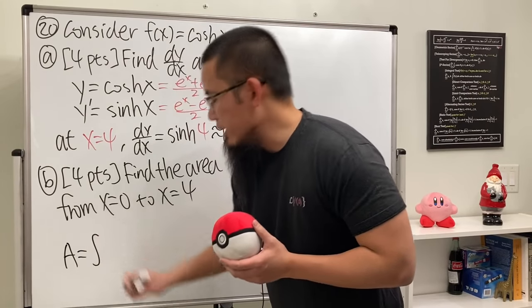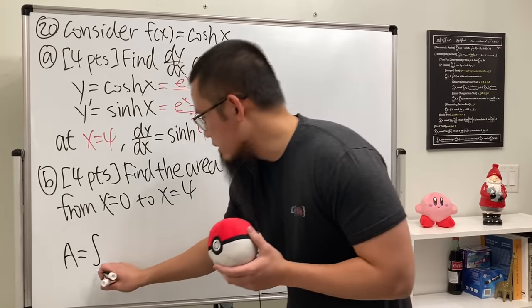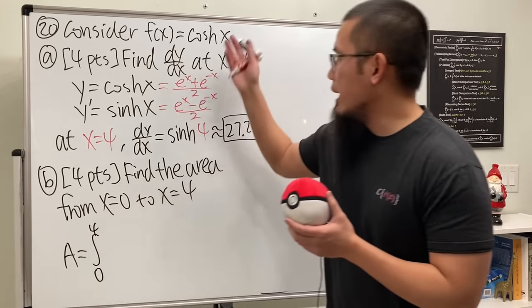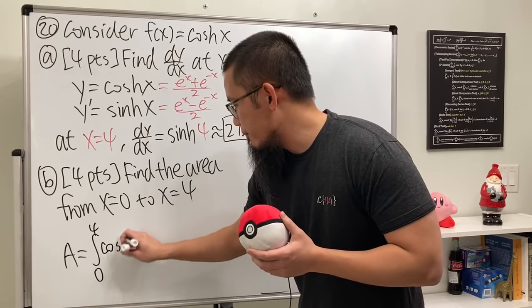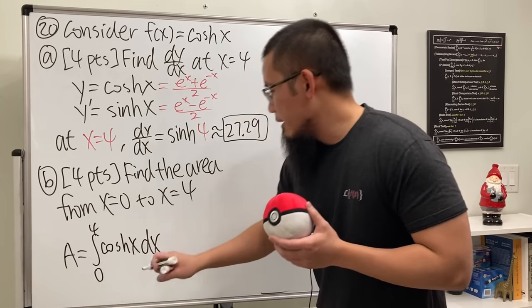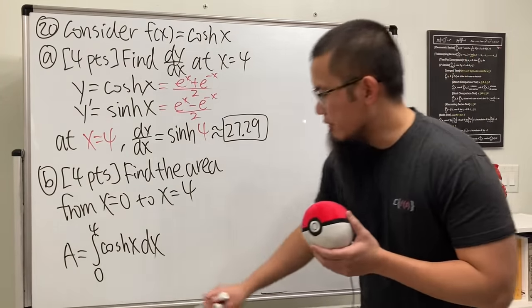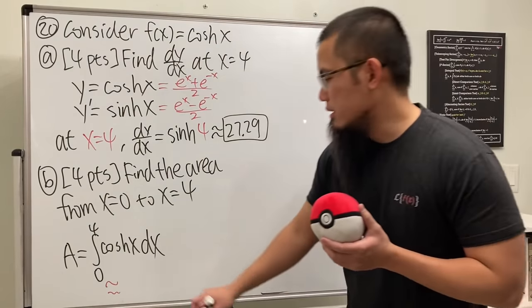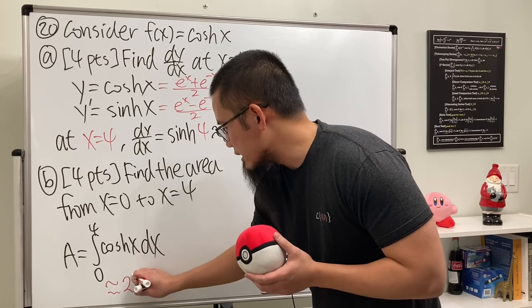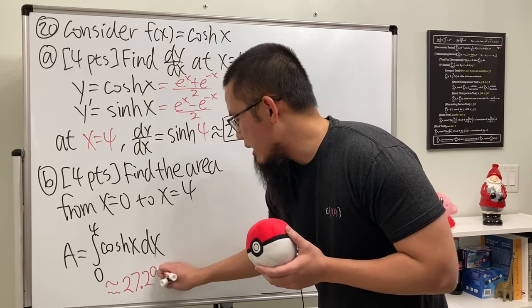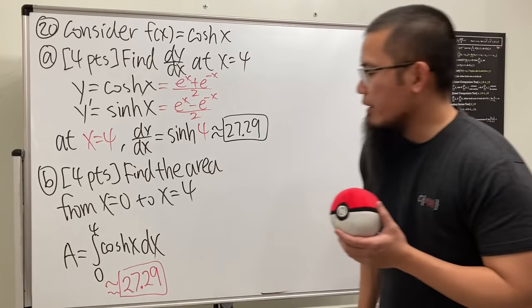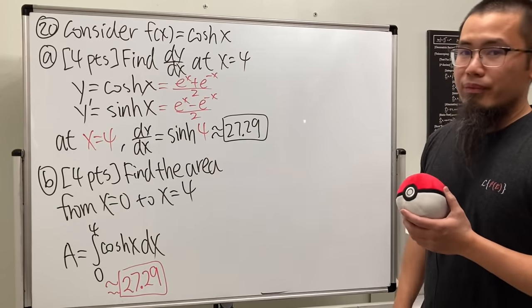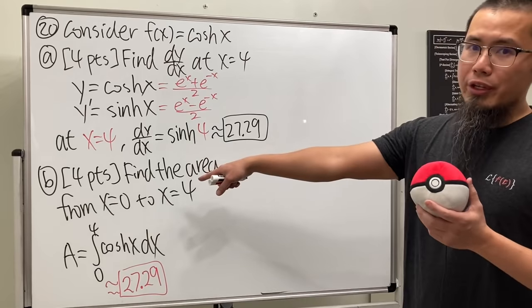Finding area under the curve is just an integral, so area equals the integral going from 0 to 4, and we are integrating cosh(x) dx. Again, they can just go ahead and use the calculator, and if they do that they will see something really interesting because the answer is also approximately 27.29.